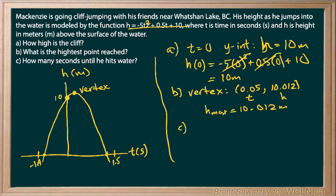Carrying on to Part C: how many seconds until he hits the water? He leaves the cliff, goes up, and then gravity brings him down further and further until he hits the water — a splash down. Hitting the water is our x-intercept down here on the graph.